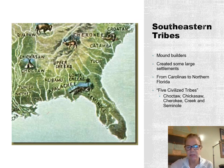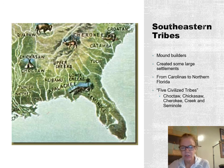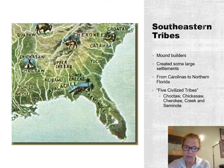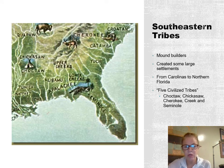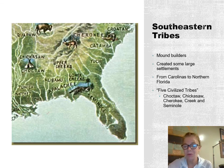Down here are the Southeastern tribes — the five civilized tribes: Choctaw, Seminole, Creek, and Cherokee. They're known as the civilized tribes because later they developed their own constitution and their own alphabet. Some of the Cherokee were even plantation owners and had slaves. So very different from those out on the Great Plains.